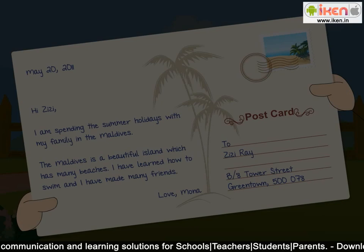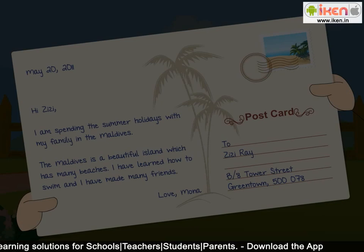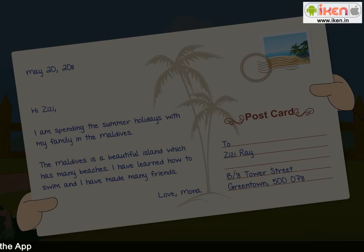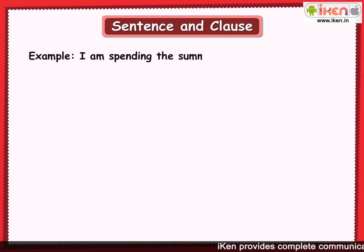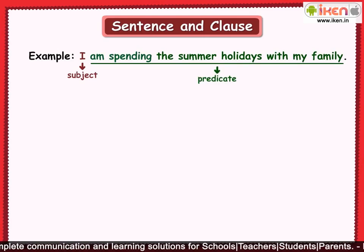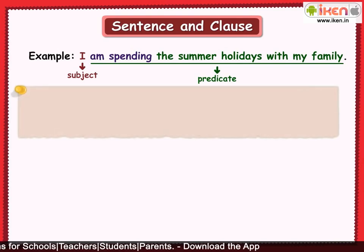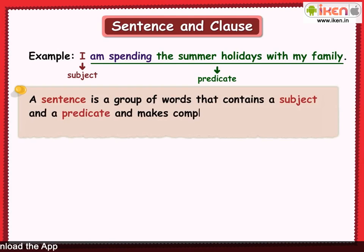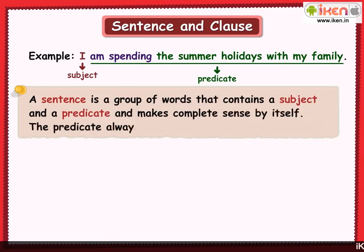Reading letters from your friend sure is fun. Let's take a look at what Mona wrote to Zeezy. Mona has written a number of sentences or groups of words. Each sentence contains a subject and a predicate and also makes complete sense by itself. For example, 'I am spending the summer holidays with my family.' In this sentence, the subject is 'I' and the rest of the words form the predicate. The predicate contains the verb 'spending.'